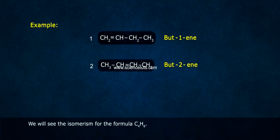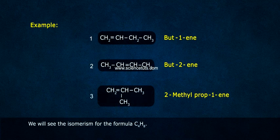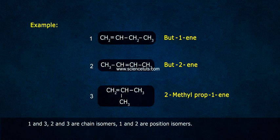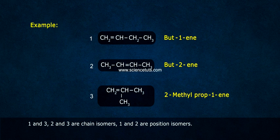Example: We will see their isomerism for the formula C4H8. 1 and 3, 2 and 3 are chain isomers. 1 and 2 are position isomers.